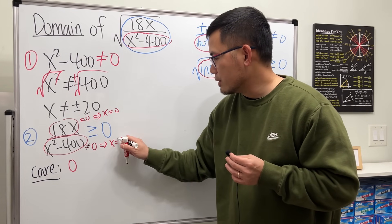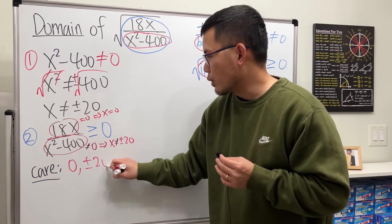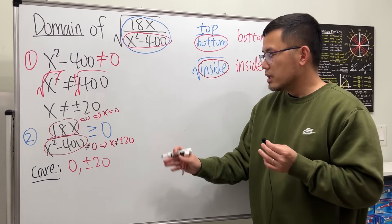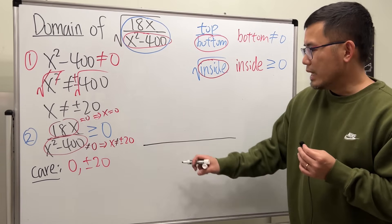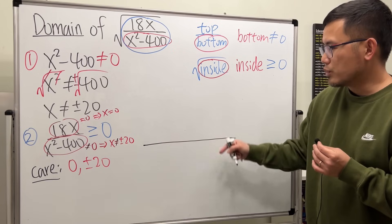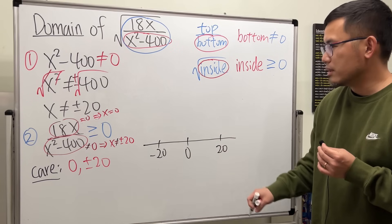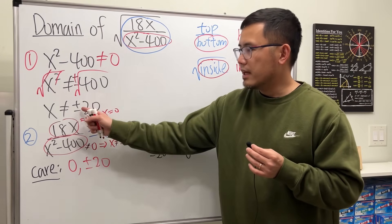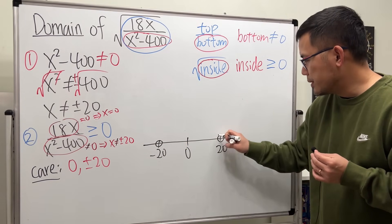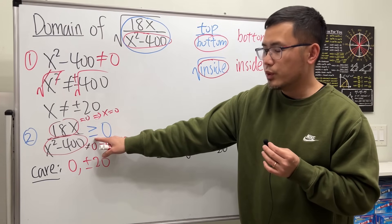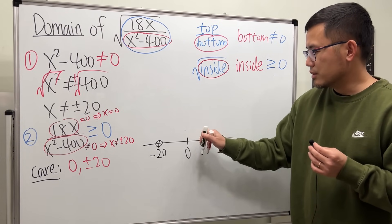Note that x = plus or minus 20 are technically excluded because they're in the denominator. We care about three critical numbers: 0, negative 20, and positive 20. Draw a number line with these values. Place open circles at negative 20 and positive 20, and a closed circle at zero since the inequality is greater than or equal to zero.